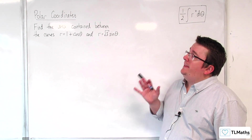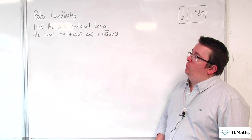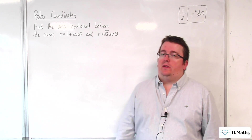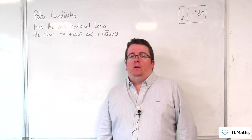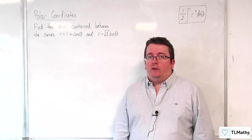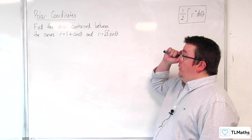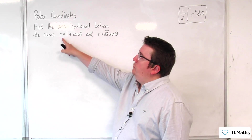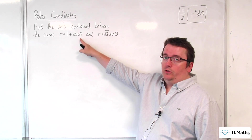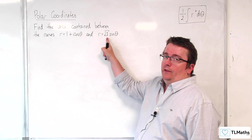In this video we're going to find the area contained between the curves r equals 1 plus cosine theta and r equals root 3 sine theta. We should identify that r equals 1 plus cosine theta is a cardioid, and r equals root 3 sine theta is a circle.